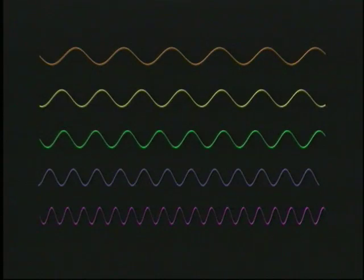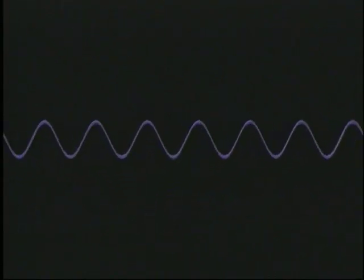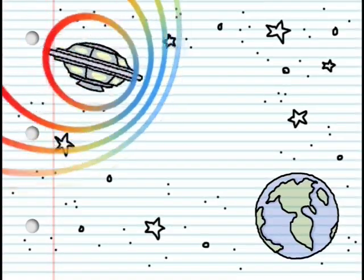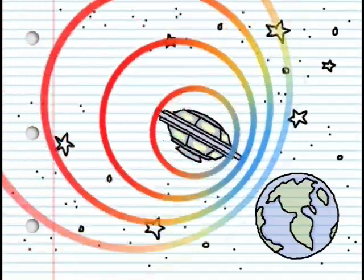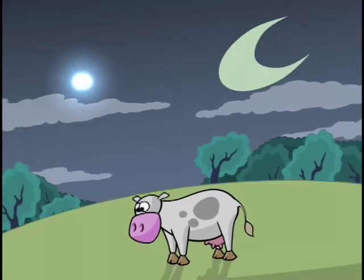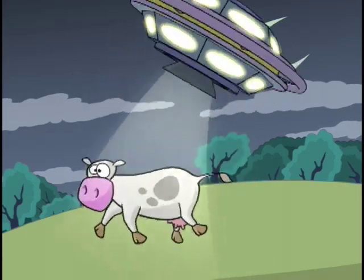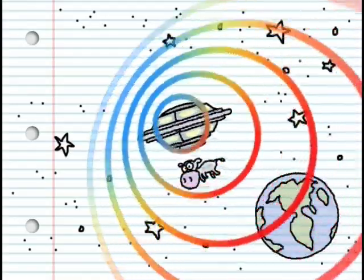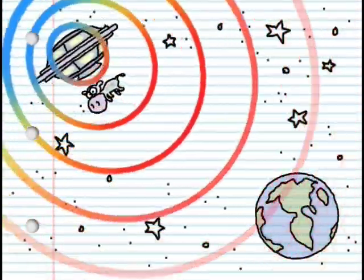Light also travels in waves, and a similar thing happens to these waves. Light waves are able to compress and stretch, thereby changing their frequency or color. Blue light has shorter wavelengths than red light. When an object in space moves towards us, its light waves are compressed into higher frequencies or shorter wavelengths, and we say that the light is blue shifted. When an object moves away from us, its light waves are stretched into lower frequencies or longer wavelengths, and we say that the light is redshifted.